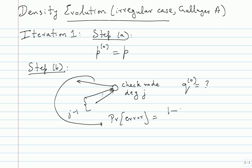The probability of error works out to (1 minus (1 minus 2P)^(J-1)) / 2 — the probability that an odd number of the J minus 1 messages are in error. Now I need to pick a random edge and allow the Tanner graph to vary over all possible graphs. The crucial question: if I select an edge, what is the probability that it is connected to a check node of degree J?